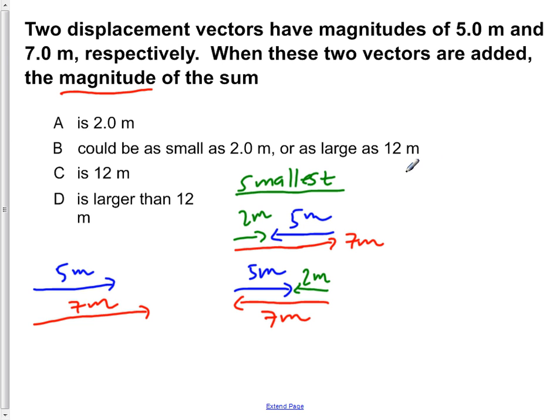It's going to be 2 meters in all the cases. Now we're going to deal with what will be our largest possible value. If we orient these vectors in the same direction, so 7 meters to the east and 5 meters to the east, this gives us a resultant of 12 meters.